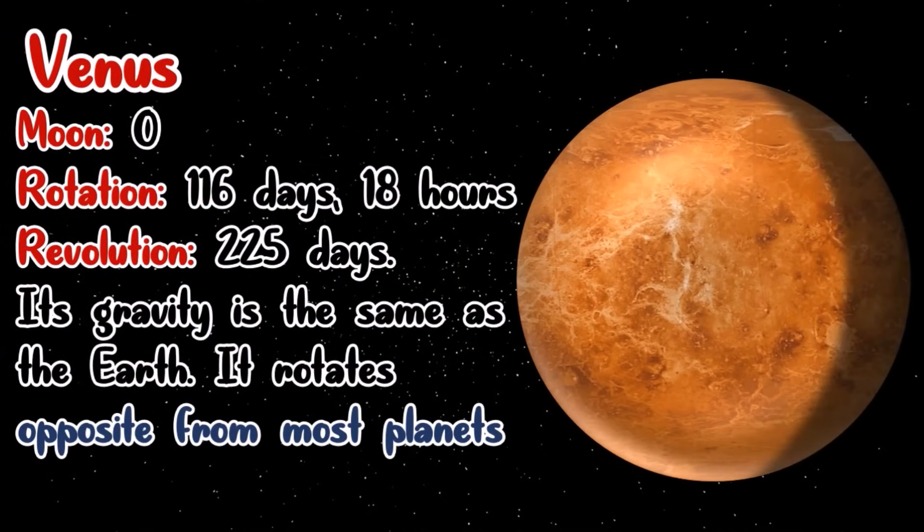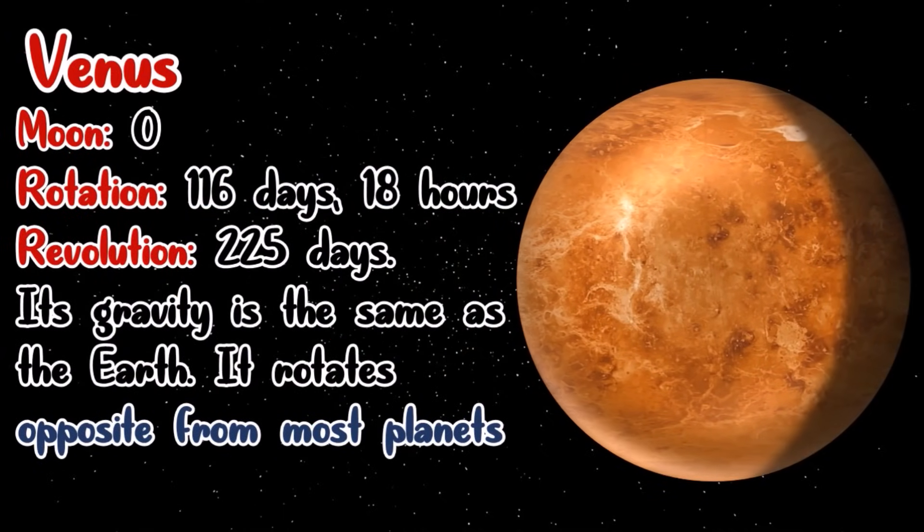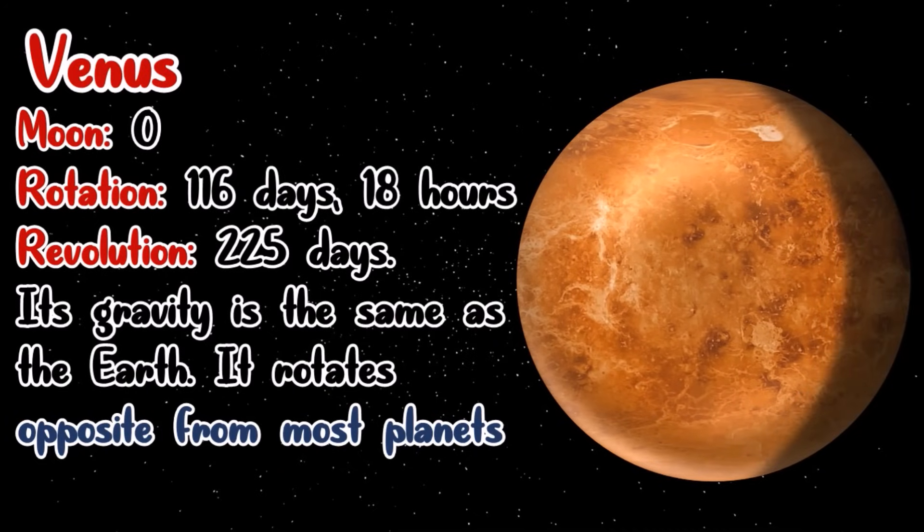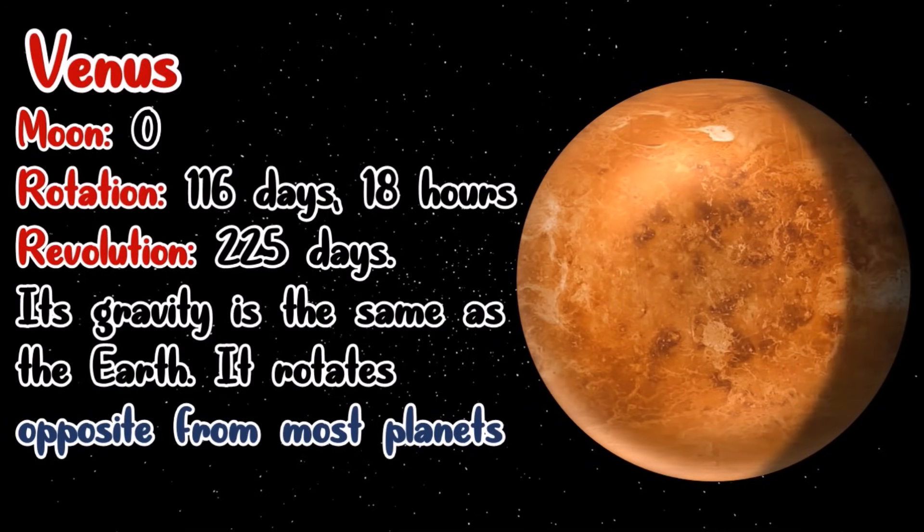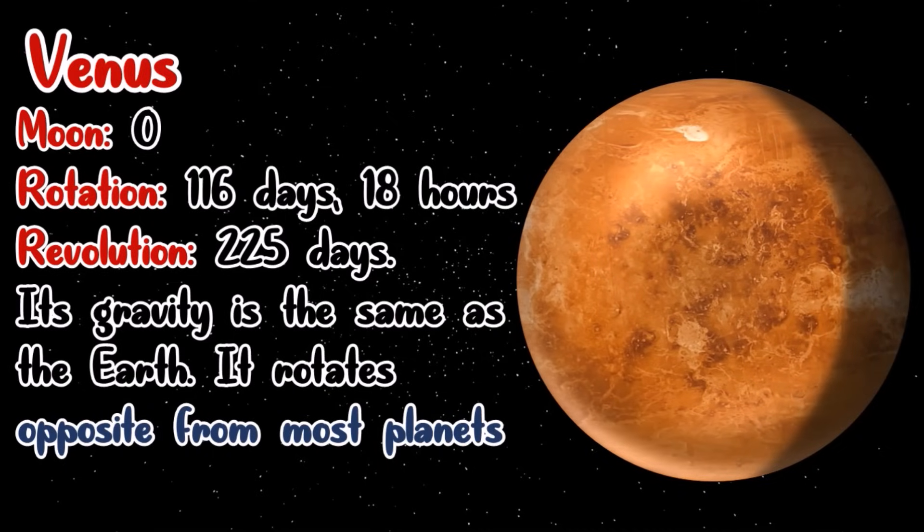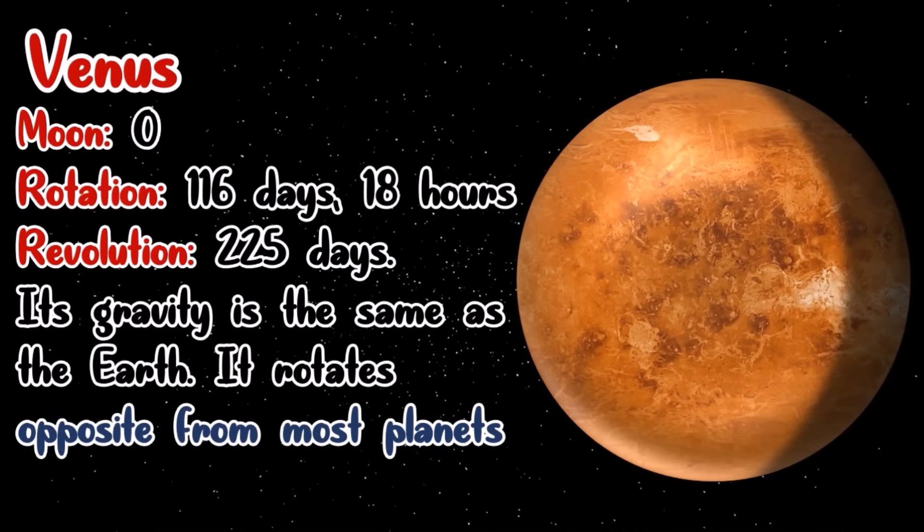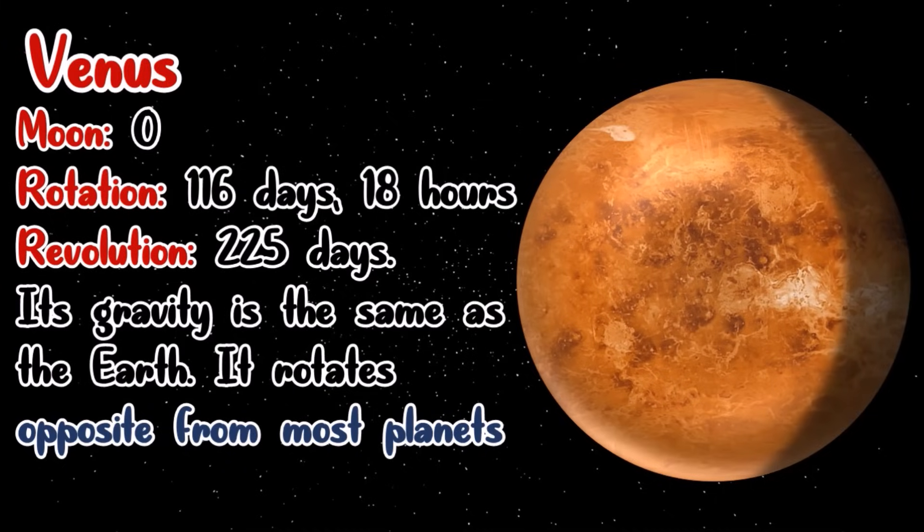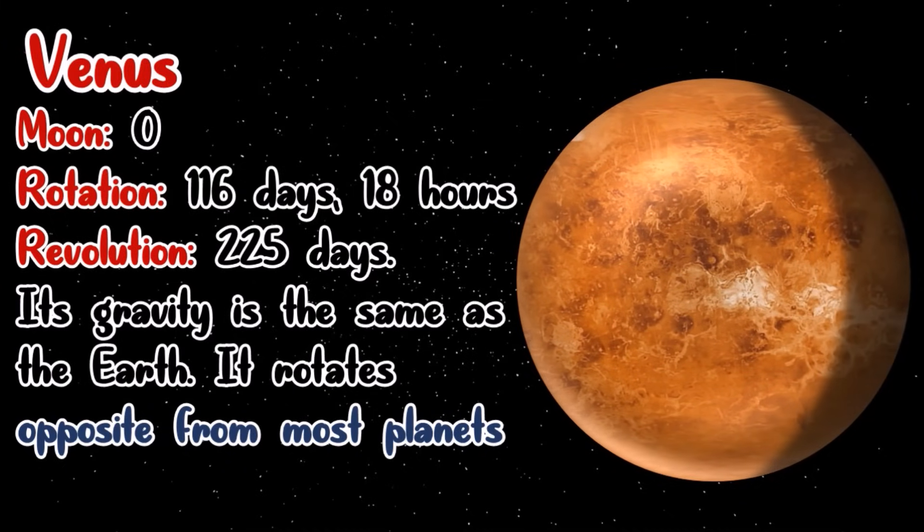Venus has no moons, and the gravity is as strong as the Earth. A rotation of Venus requires 116 days and 18 hours. However, its revolution requires 225 days. Venus's rotation is very slow, that it only rotates two times in one year.